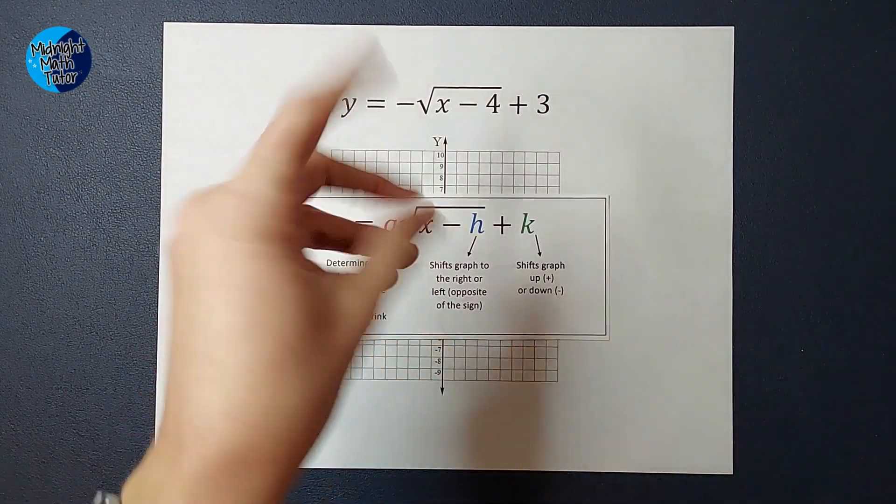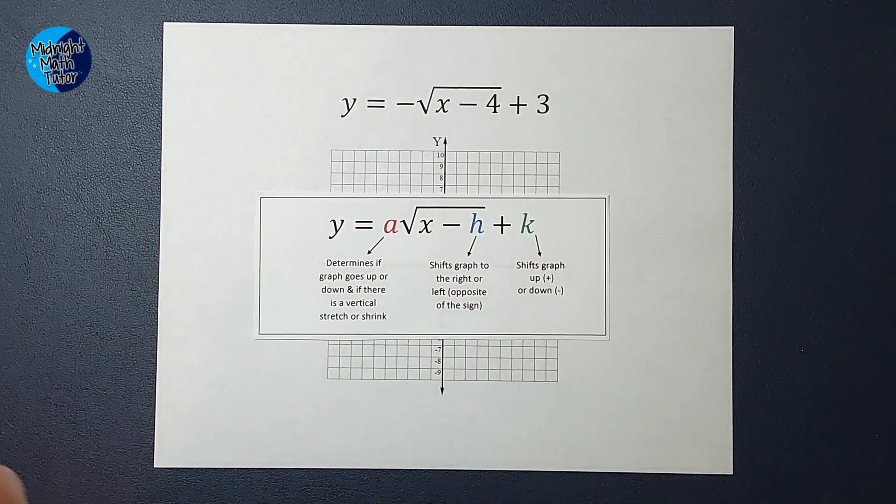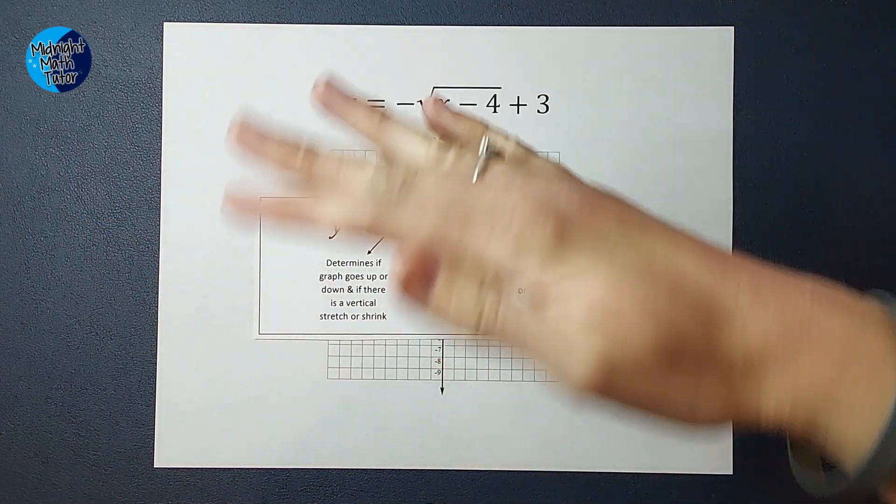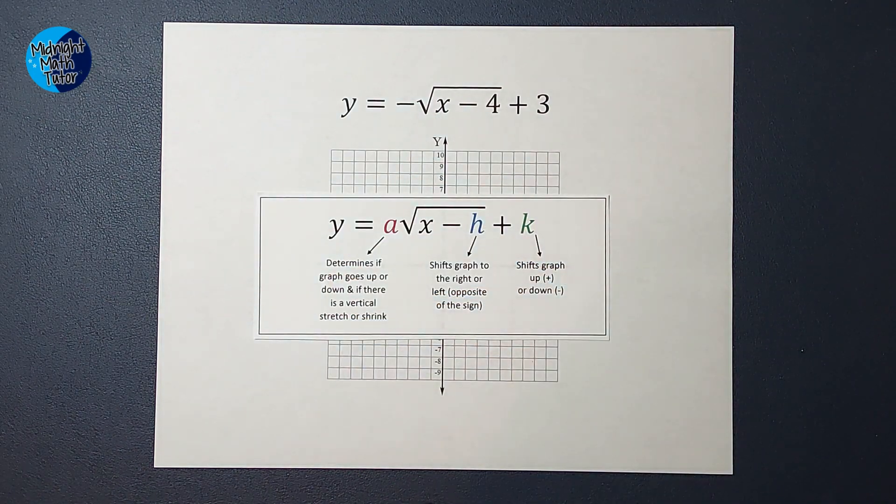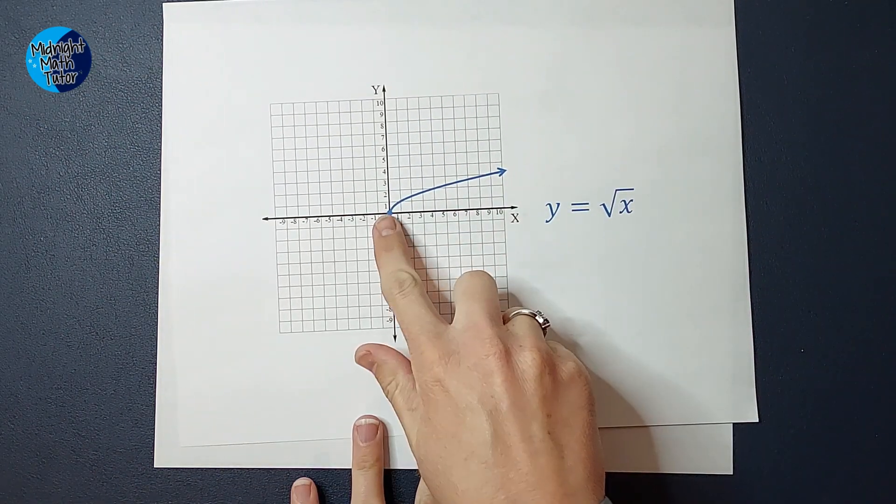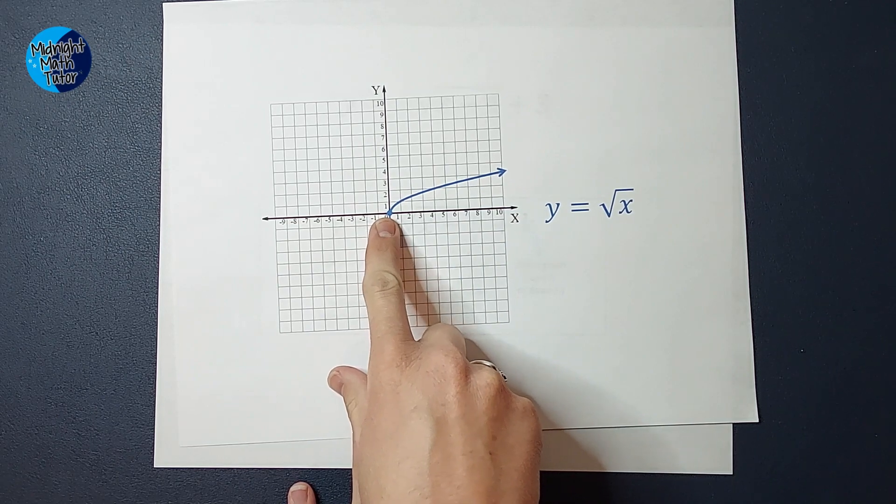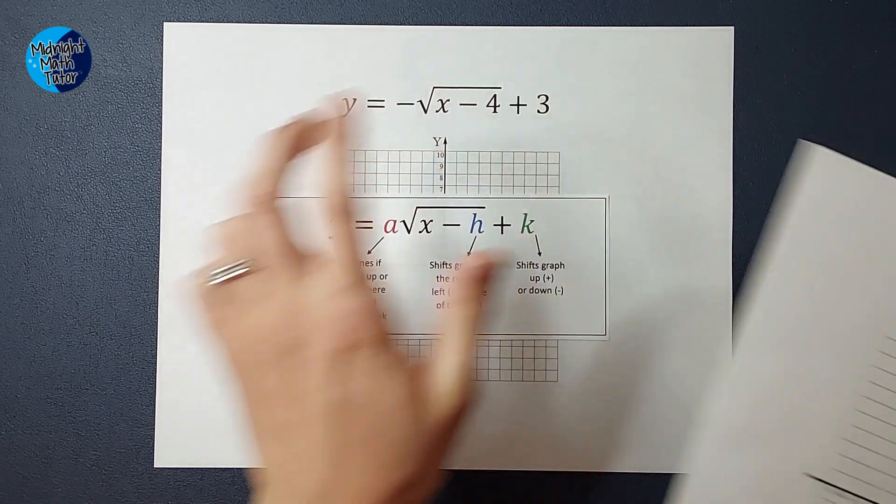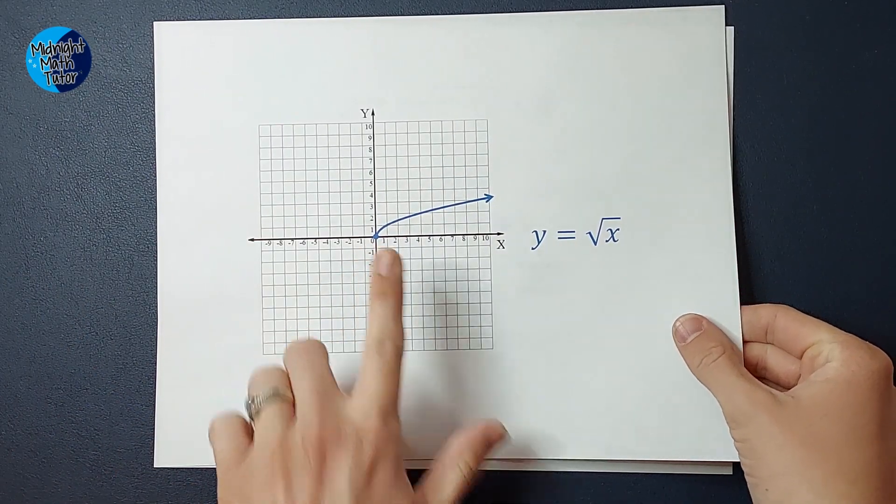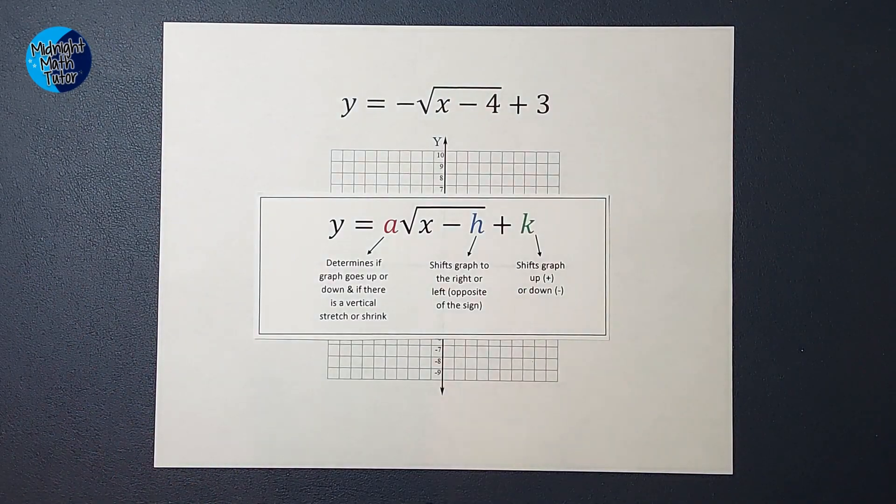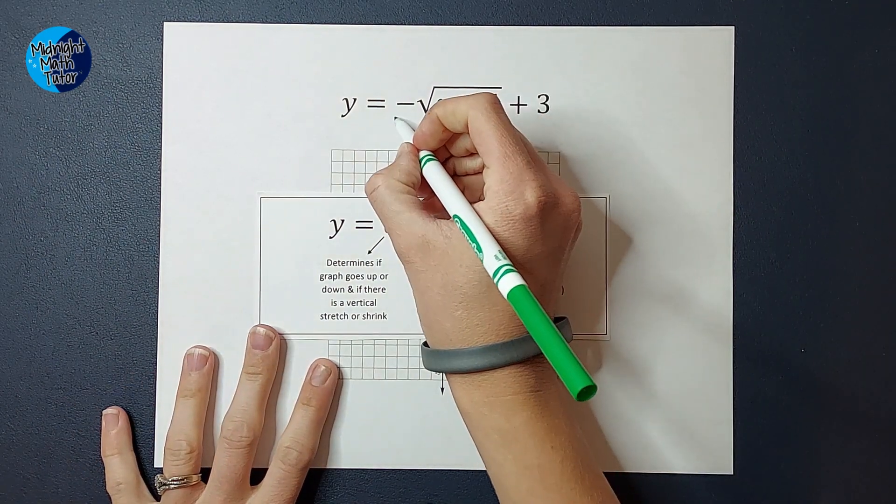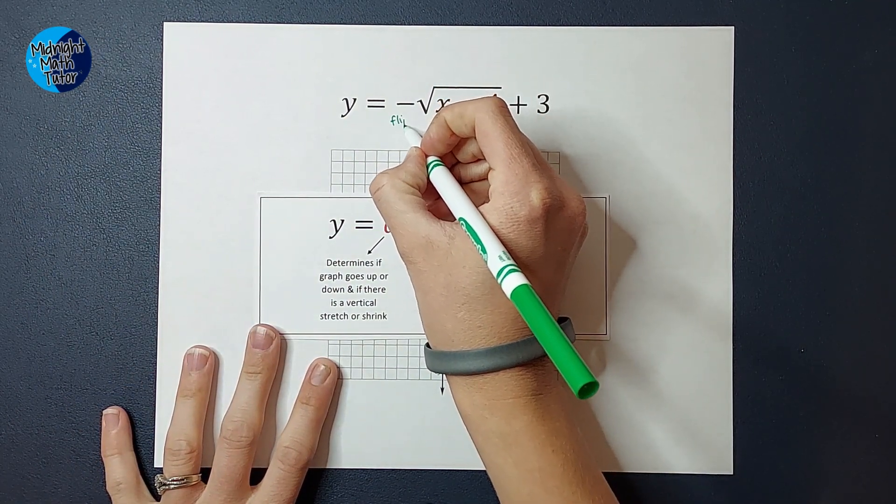Now, in this case, there's an invisible 1, really, right? But we also have that negative, which means my parent graph is going to be flipped. So how this one goes up and over, since it's a negative, we're going to go down and over. And then these numbers here tell me where my starting point shifts to. So, first of all, I know because of this negative that I'm going to flip the parent graph.